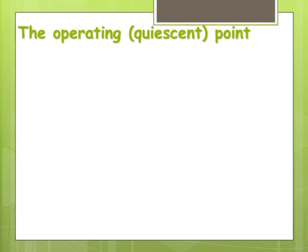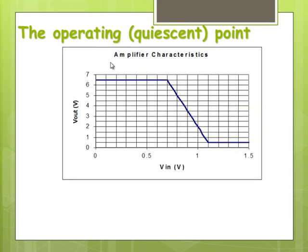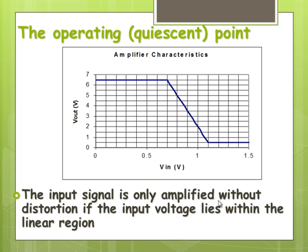So let's talk more about this operating point. We've got a typical transfer characteristic graph. We have the input signal that will only be amplified without distortion or correctly if everything lies within the linear region. In order to do that, we want the operating point pretty close to the middle. That means it's got maximum room to move either side of that operating point. Okay, we call that the quiescent point. So in this case, our input voltage lies between 0.7 and 1.1 volts. So your operating voltage, your optimum operating voltage or your quiescent point is 0.9 volts.